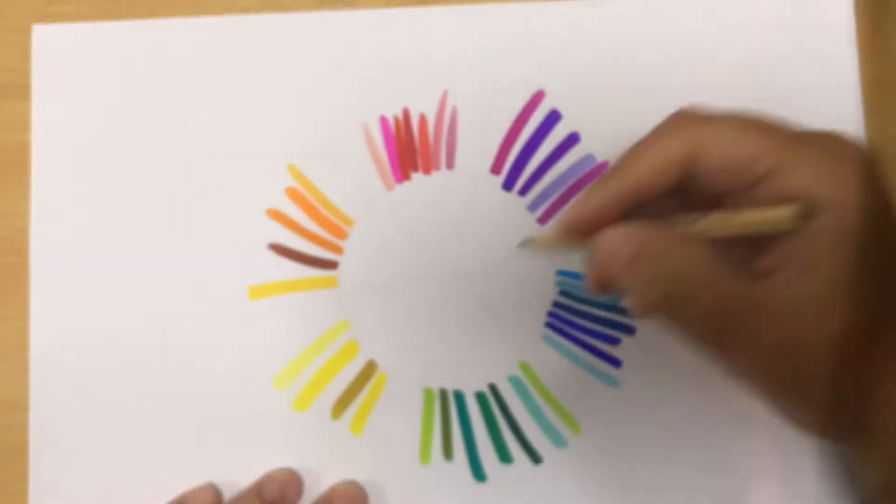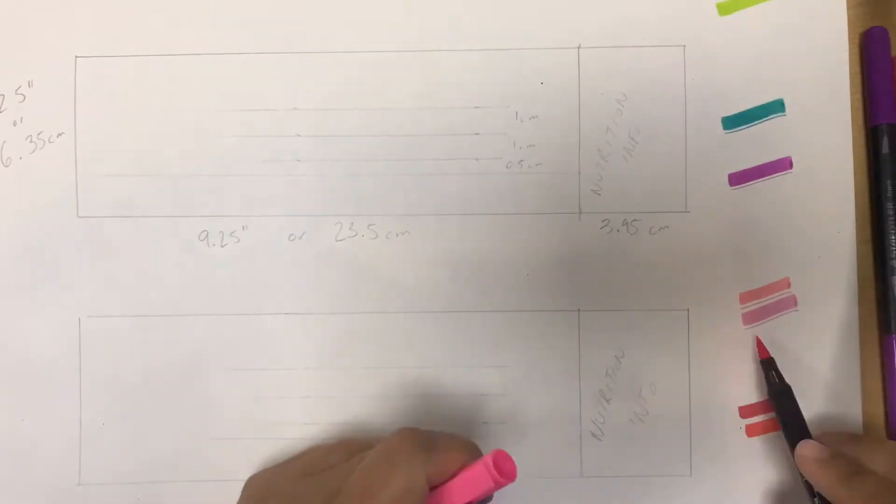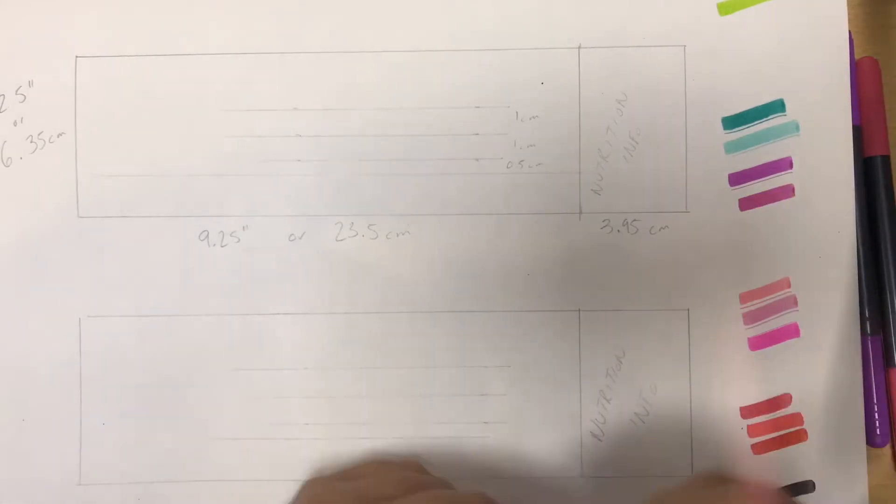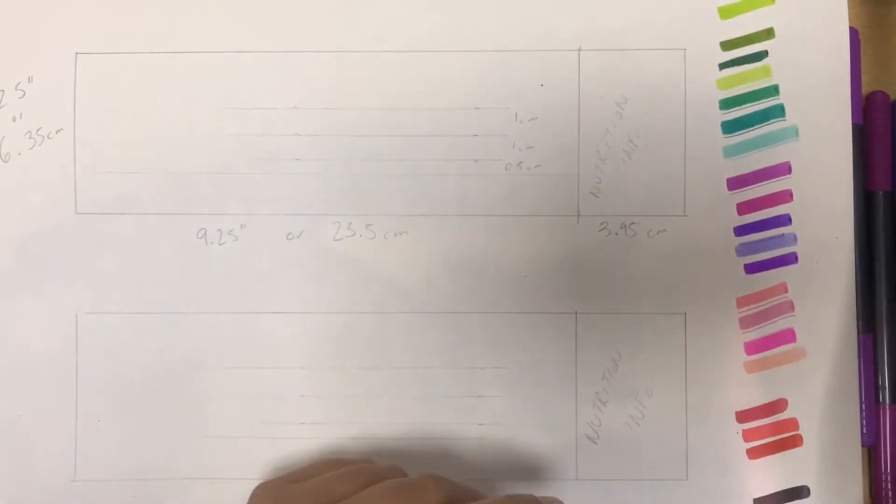And that kind of got me the color scheme that I wanted to use. You can see that here in the color wheel, but I've also put out a color swatch along the side of my page so I can keep track of which markers create which color and what looks good next to each other.